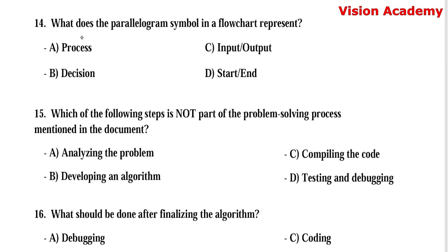Question number 14: What does the parallelogram symbol in a flowchart represent? Option A, process. Option B, decision. Option C, input/output. Option D, start/end. Here, option C, input/output, is the right answer.